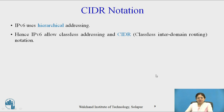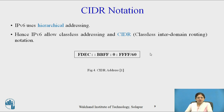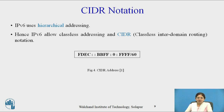Now the next topic is CIDR notation. IPv6 uses hierarchical addressing, hence IPv6 allows classless addressing and CIDR notation. CIDR stands for Classless Interdomain Routing. For example, the address FDEC double colon BBFF colon 0 colon FFFF slash 60, where 60 represents the number of bits present in the prefix. This gives us the network class or the address prefix.